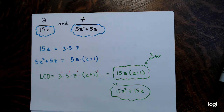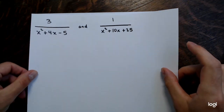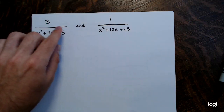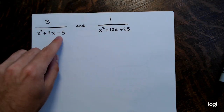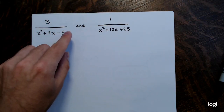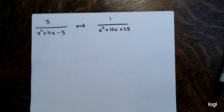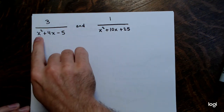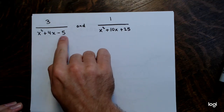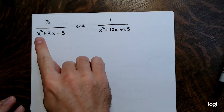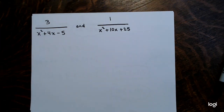The next example increases complexity further. Now both denominators are trinomials, quadratic in the variable x: 3 divided by (x squared plus 4x minus 5), and 1 divided by (x squared plus 10x plus 25). The procedure is still exactly the same.